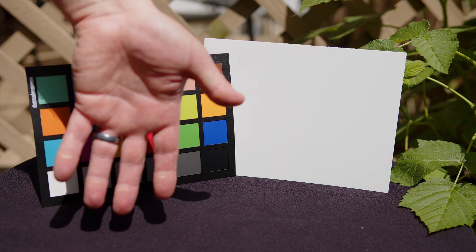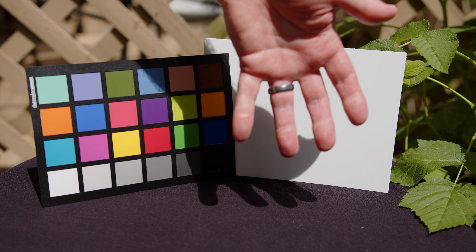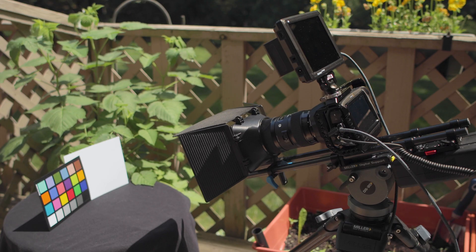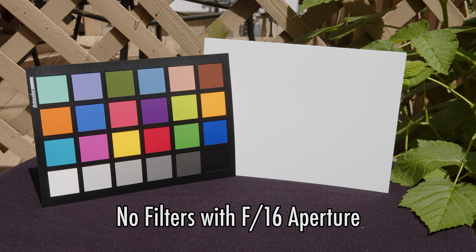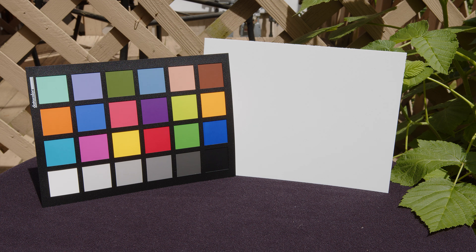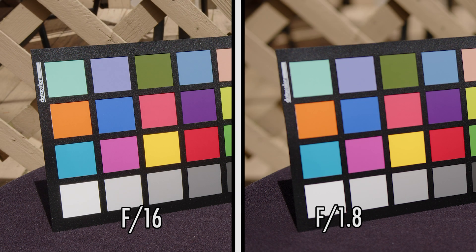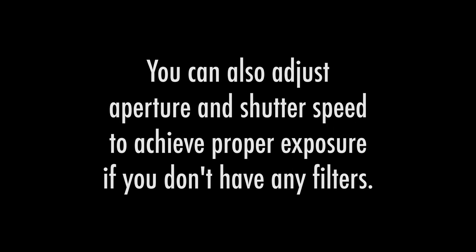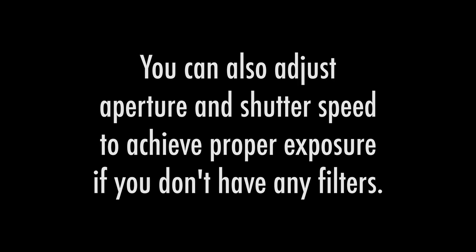Unfortunately, with such a high shutter speed, our motion blur does not look natural — watch the movement of my hand. Another way to deal with proper exposure on a bright sunny day without a filter is to use a high-numbered f-stop. For this to work in our shot, we had to close our lens down from f1.8 to f16. This solves our motion blur problem, but you'll notice that we no longer have shallow depth of field — our background is no longer blurry. You can also mix increasing shutter speed with f-stop settings as another approach.